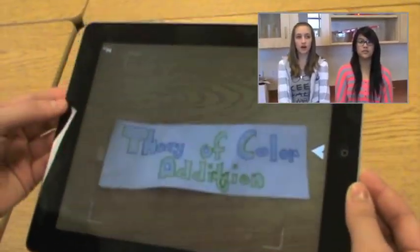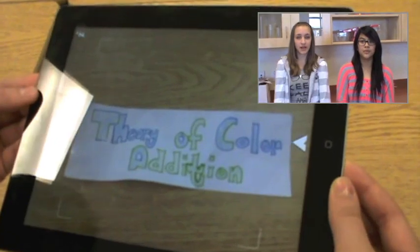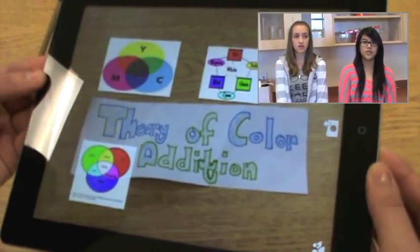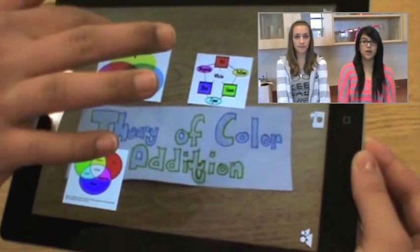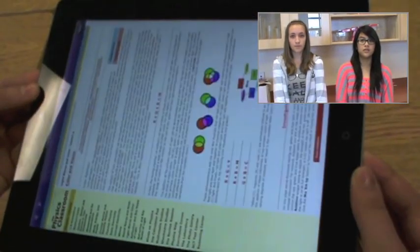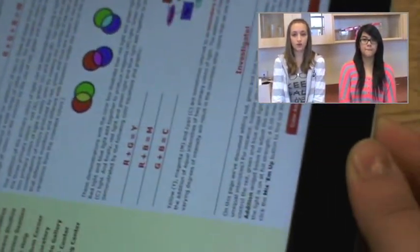Once you have the app you have to log in and create an account. Once you created an account you have to follow the channel. Once you followed the channel you can hold your personal device over the image and it should trigger images. You can click on it and the website and the picture will come.